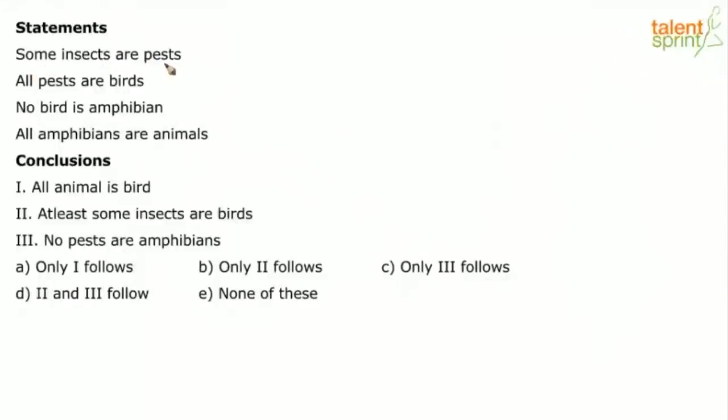Some statements are pests. All pests are birds. No bird is amphibian. All amphibians are animals. So let's quickly draw the basic diagram for this one.